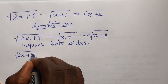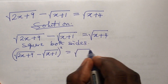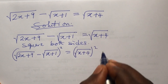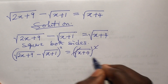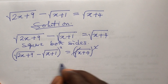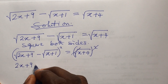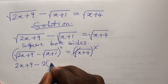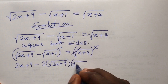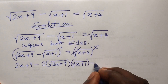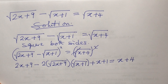So the left hand side is: (√(2x+9) − √(x+1))² equals (√(x+4))². The right hand side doesn't have much issue. On the left, expanding gives us 2x plus 9, then minus two times √(2x+9) times √(x+1), plus x plus 1, all equal to x plus 4.